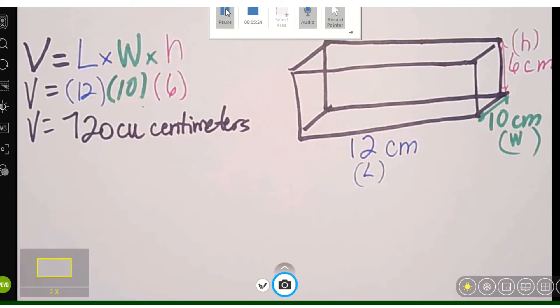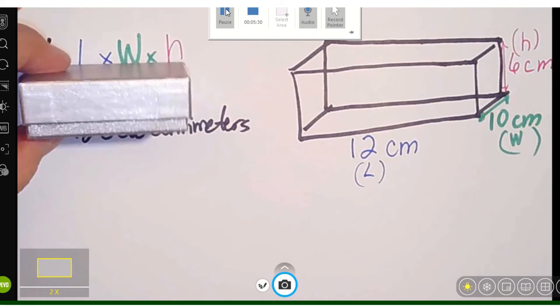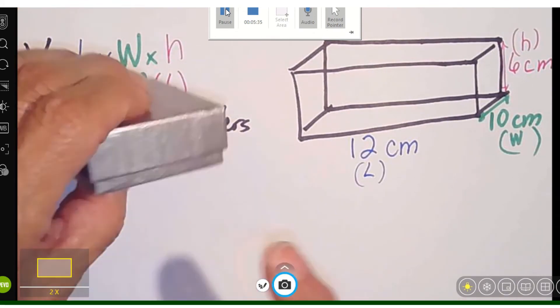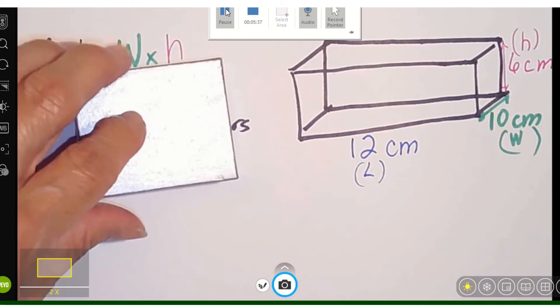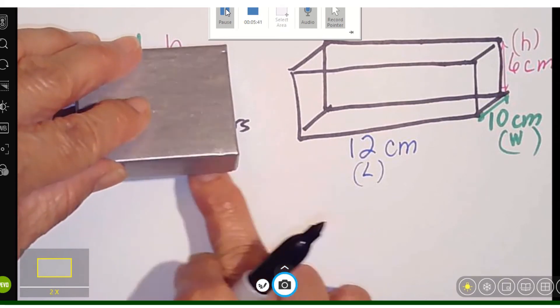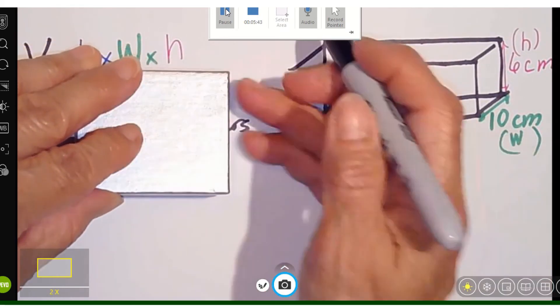Okay, so the other way is we're going to take both the bases. If we look at our box again, this is considered a base and this is considered a base right here. Why? Because when they're sitting down, this is a base down here and this is a base right here.